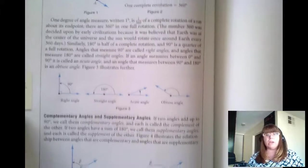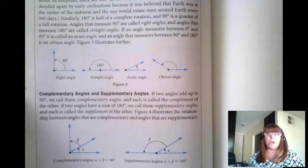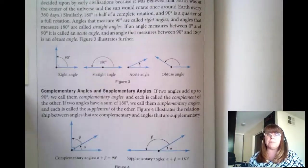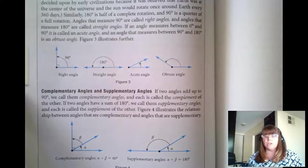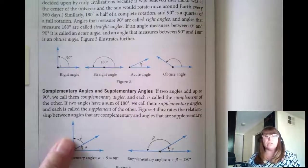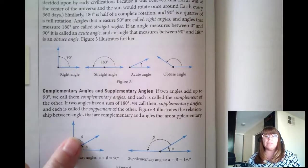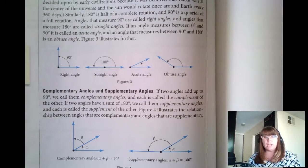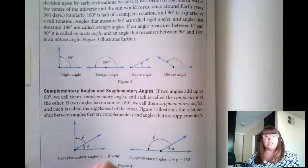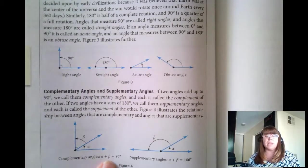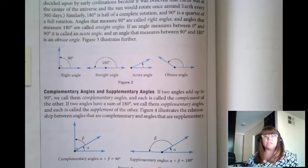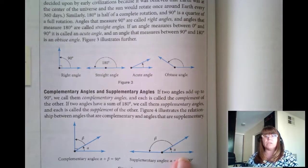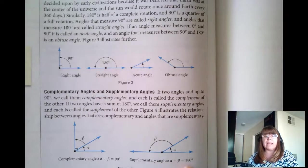Angles that are larger than 90 but less than 180 are called obtuse angles. And then we also have complementary angles and supplementary angles. So complementary angles are two angles that when you add up what the degree is, their measure, they will add to 90 degrees. Supplementary angles, you have two angles and their measures add up to 180.